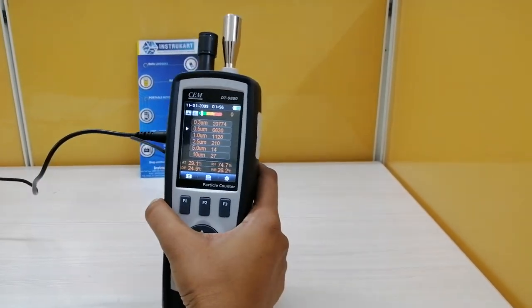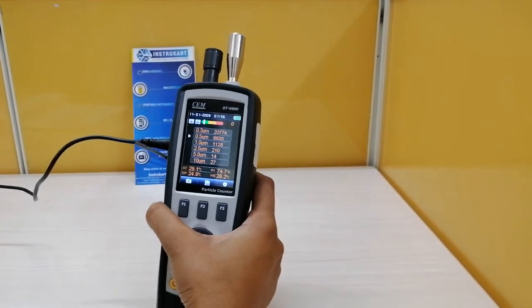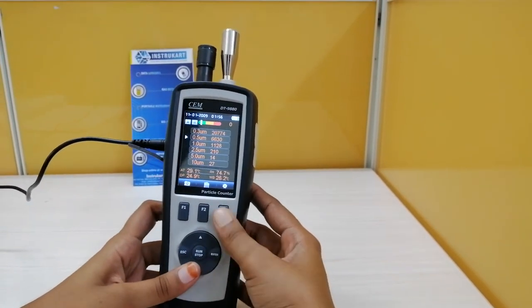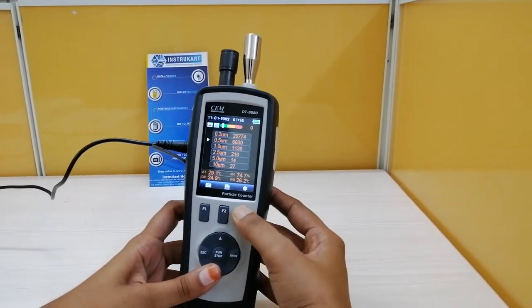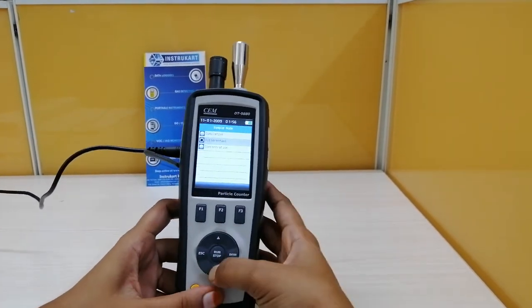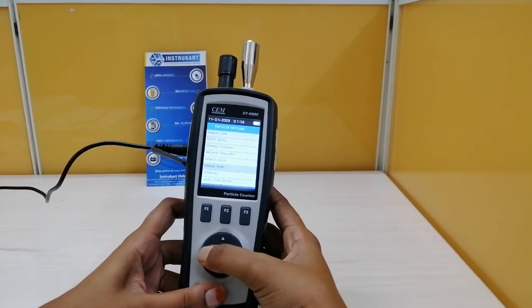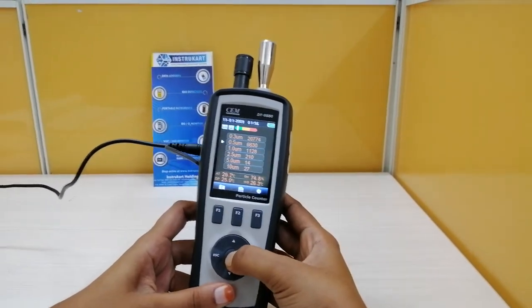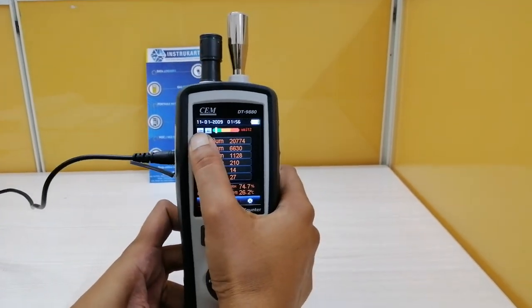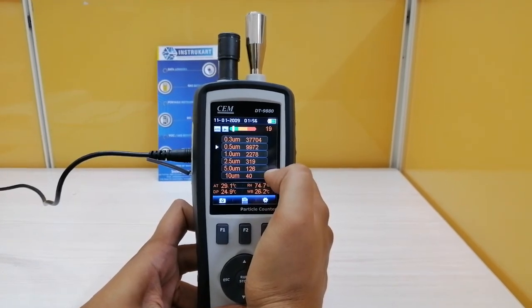And one more measuring sampling mode is concentration - mass concentration. I will show you. Sample mode, concentration. Now again I will sample. You can see here the indication is on 'con', which means it is measuring in mass concentration mode.